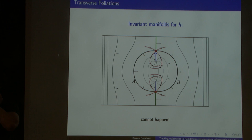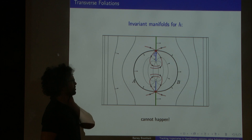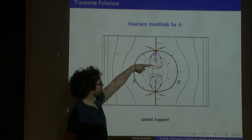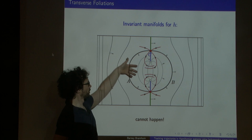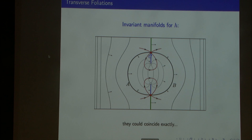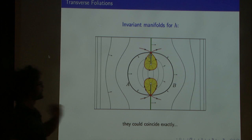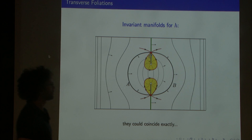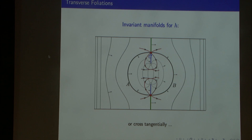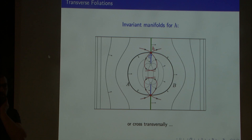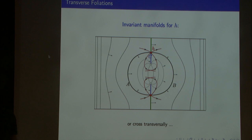Now for the first time we can use the fact that this flow is volume-preserving. Volume-preserving means this scenario couldn't happen where the forwards invariant manifold is disjoint from the backwards one — that would mean stuff flowing in here gets trapped and never comes out. So they have to intersect. They could coincide exactly, giving an invariant region — a solid torus bounded by the red invariant manifold. Or they could meet tangentially. Or they could meet transversely. I distinguish these because there's a huge body of literature for two-dimensional maps based on this distinction.